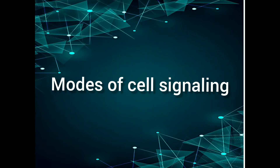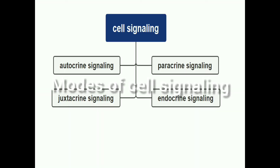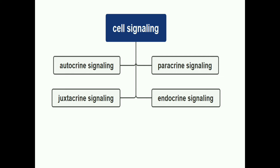In the modes of cell signaling, we are going to study 4 types: autocrine signaling, paracrine signaling, juxtacrine signaling, and endocrine signaling. In this video, we will talk about these signaling pathways and how cell signaling works.